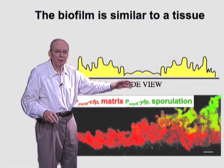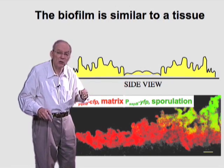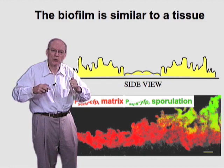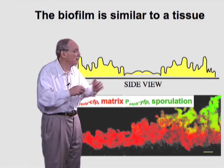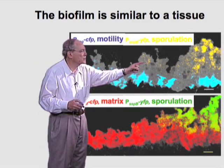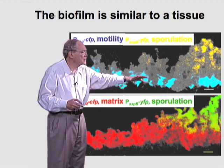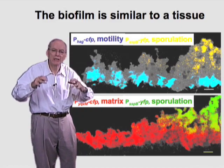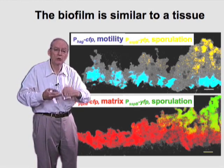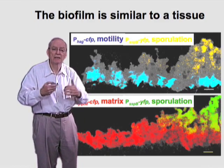Looking at the cross-section, matrix-producing cells in red and sporulating cells in green occupy distinct positions in the biofilm. The sporulating cells are near the top, as seen in the fruiting body-like structure in the light micrograph shown earlier, and the matrix-producing cells are underneath. The motile cells are near the extreme bottom. So motile cells, matrix-producing cells, and sporulating cells occupy three different regions of the biofilm — motile cells near the bottom, matrix-producing cells in the middle, and spore-forming cells near the top. We can begin to think of the biofilm as a kind of tissue composed of different kinds of cells occupying different positions.